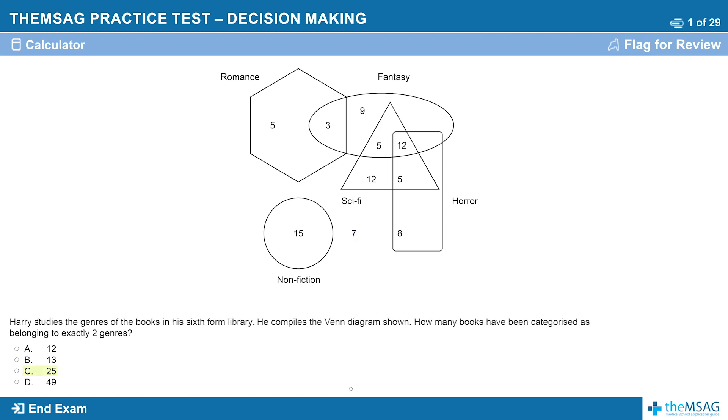You might have gotten 25 as your answer to this question. This would be because you didn't spot that one of the 12s that we can see is in fact inside three overlapping shapes, those that correspond to fantasy, horror, and sci-fi. As the question was asking for a number of books that fall into exactly two categories, these twelve books do not count.